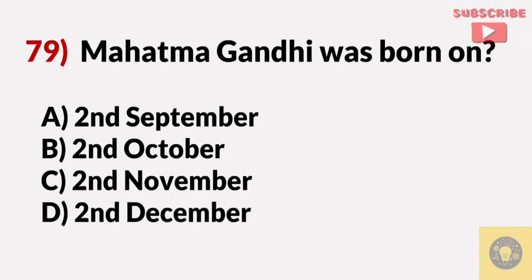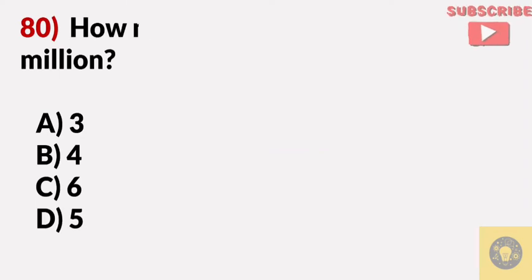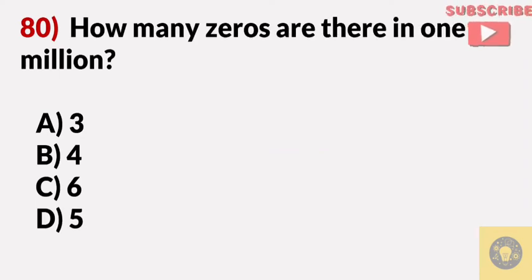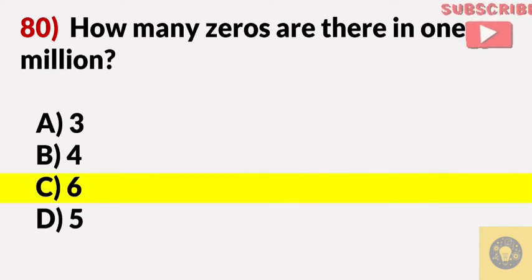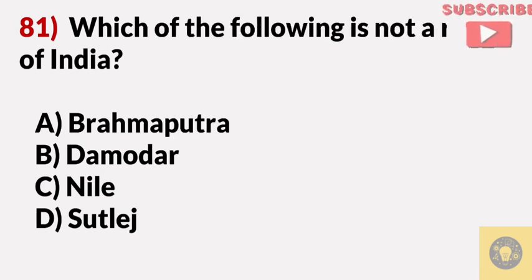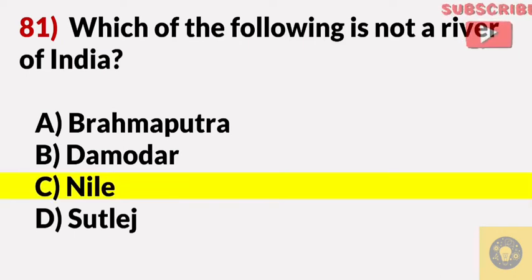Mahatma Gandhi was born on? Answer B, 2nd October. How many zeros are there in one million? Answer C, six. Which of the following is not a river of India? Answer C, Nile.